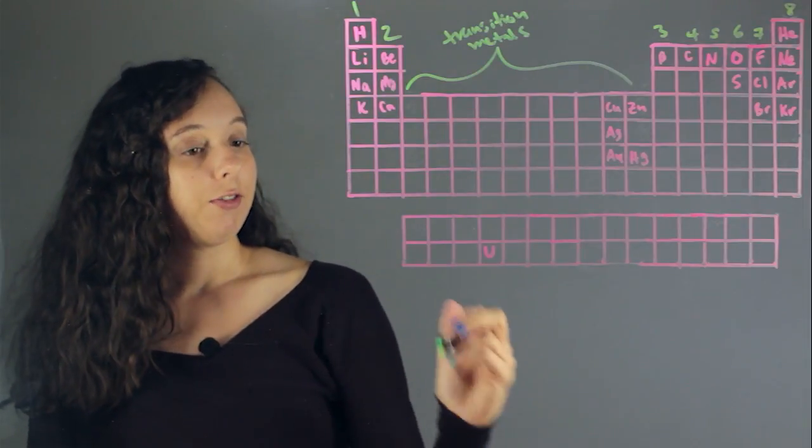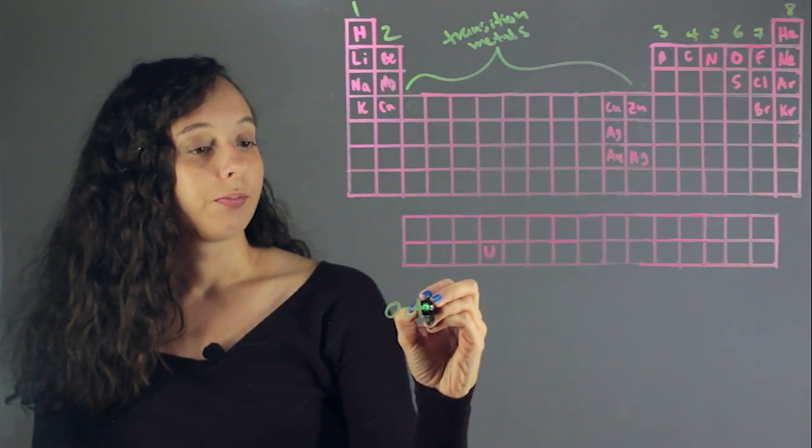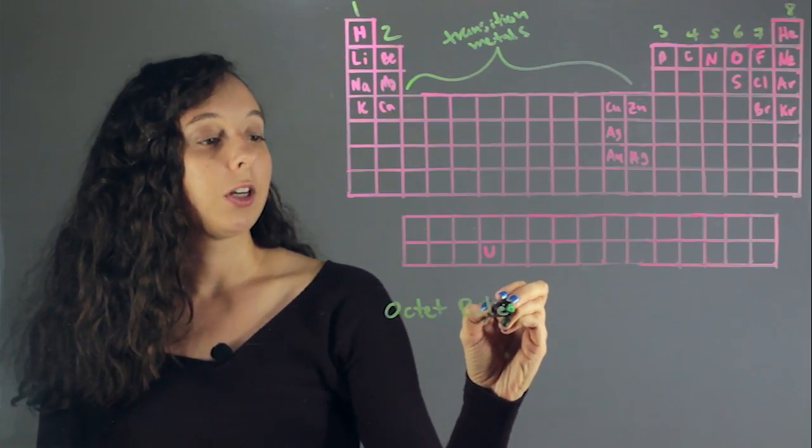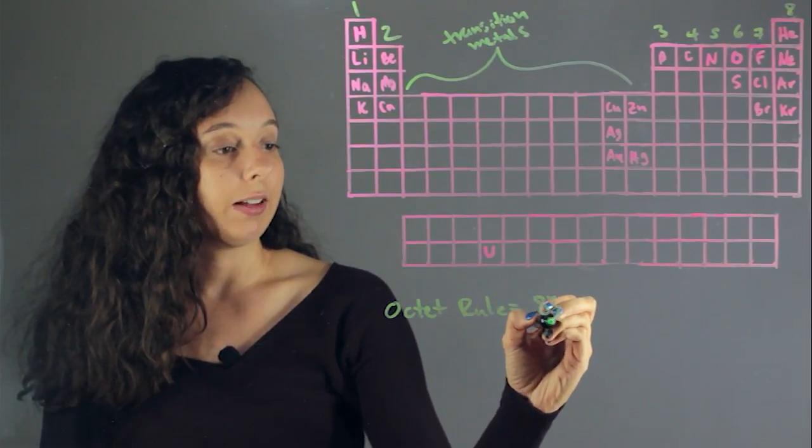So if you remember the octet rule, it says that every atom really wants eight valence electrons.